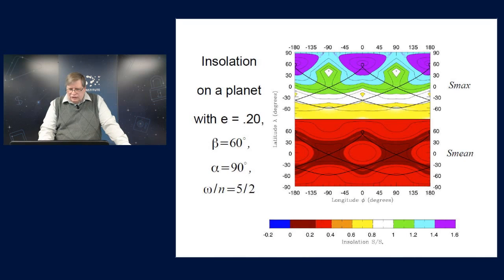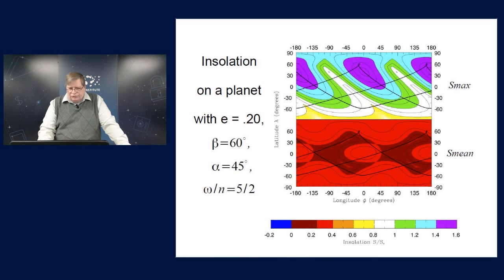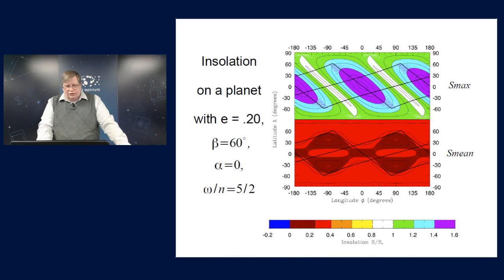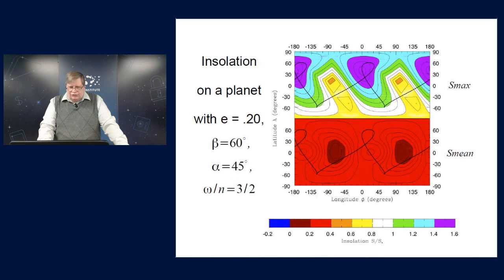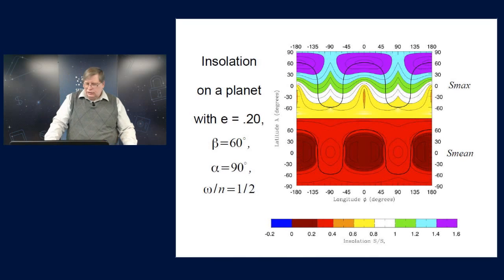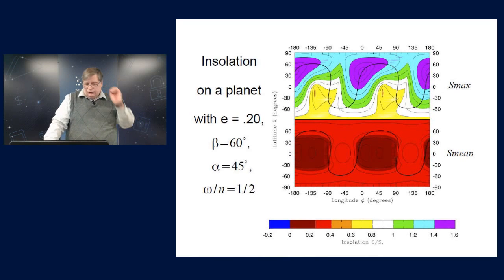If we go back and check, it's still true as we change alpha, it's still true for this three-halves resonance, the northern and southern hemispheres look the same for the mean insolation and so forth. In fact, this remains true for every half-odd integer resonance that I've looked at.